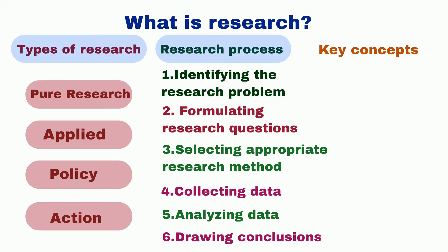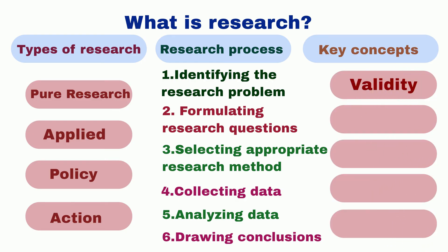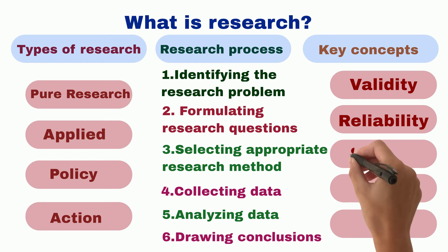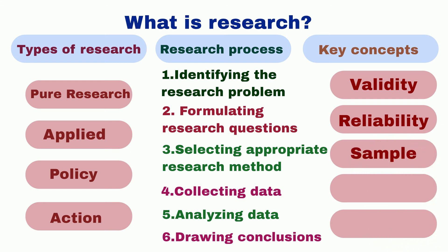There are several key concepts in research. 1. Validity refers to the extent to which the research accurately measures what it is intended to measure. 2. Reliability refers to the consistency and stability of the research findings over time. 3. Sample refers to the group of individuals or objects that are studied in the research. 4. Population refers to the larger group of individuals or objects that the sample represents. 5. Bias refers to any factors that may influence the research findings in a particular direction, such as the researcher's beliefs or expectations.